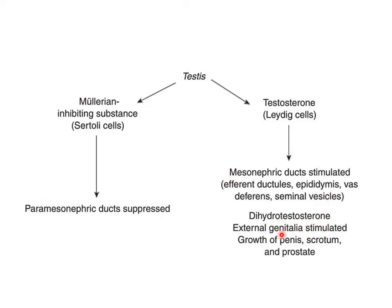The Müllerian inhibiting substance, produced by Sertoli cells, results in inhibition and suppression of the paramesonephric duct. The paramesonephric ducts are suppressed by the Müllerian inhibiting substance, also called anti-Müllerian hormone, released by Sertoli cells. The genital ducts are formed by development of the mesonephric duct, resulting in efferent ductules, the epididymis, and the seminal vesicle, all stimulated by testosterone released by Leydig cells.